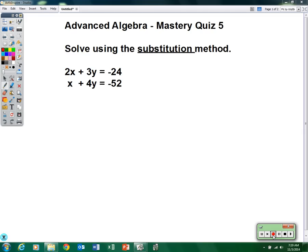Advanced Algebra Mastery Quiz 5. The first thing we're going to do is solve this system of equations by using the substitution method. So the first thing you want to try to find is which equation has a variable you can solve very quickly for. Which one is the easiest one to solve for?